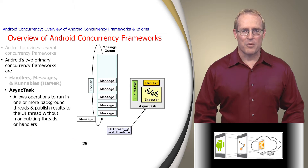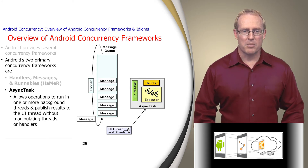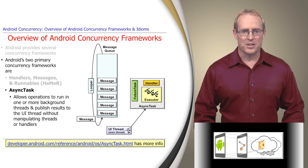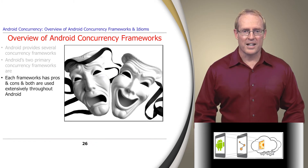Another concurrency framework is called AsyncTask, which provides a more tightly connected set of classes that execute long-duration operations in one or more background threads and publish the results to the user interface thread without manipulating threads, handlers, messages, or runnables explicitly. Each framework has pros and cons, and both are used extensively in Android's middleware and packaged applications, as we'll discuss throughout this module.